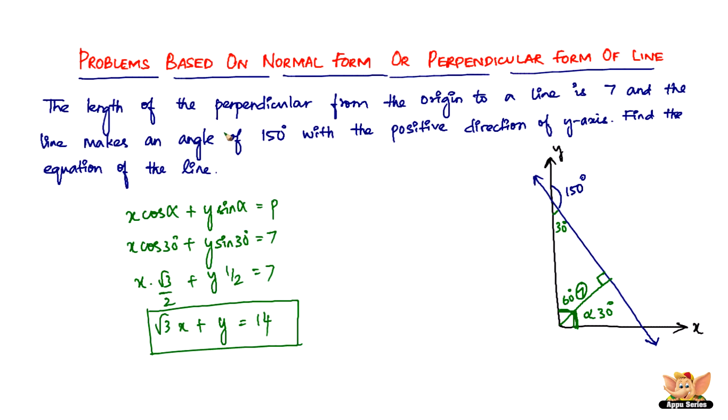All right, so that ends this problem as well as this video. Well, not the video maybe, because let me quickly briefly explain how we did this problem, because there were not direct data. Only the P was direct, but alpha we had to find.